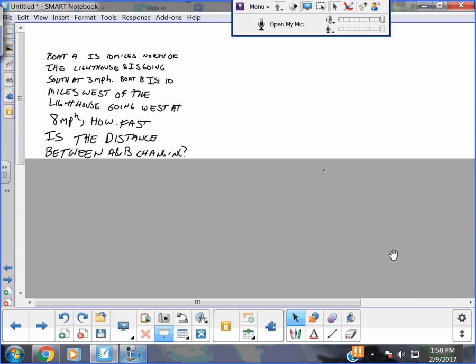Alright, so I've got a problem. Boat A is 10 miles north of the lighthouse and is going south at 3 miles per hour. Boat B is 10 miles west of the lighthouse going west at 8 miles per hour. And I'm asking you, how fast is the distance between A and B changing?